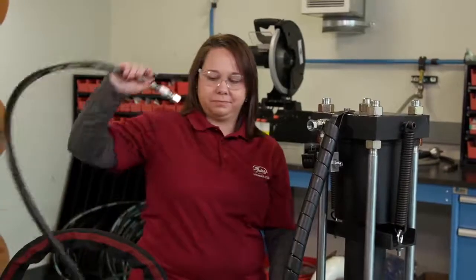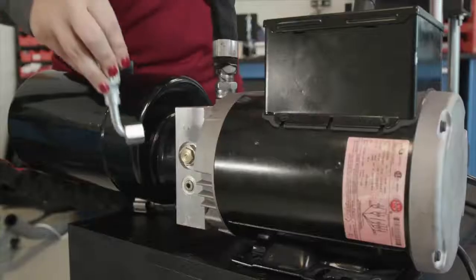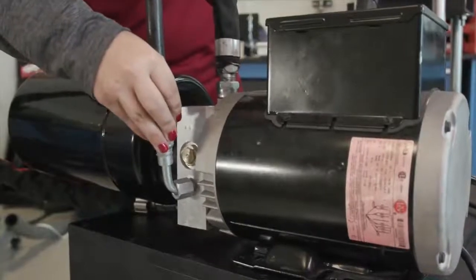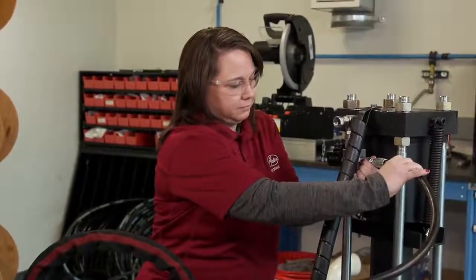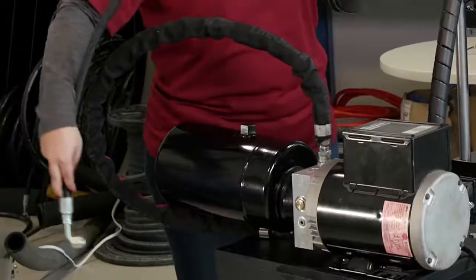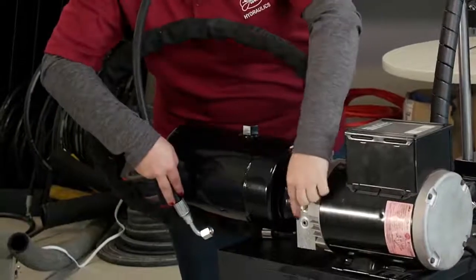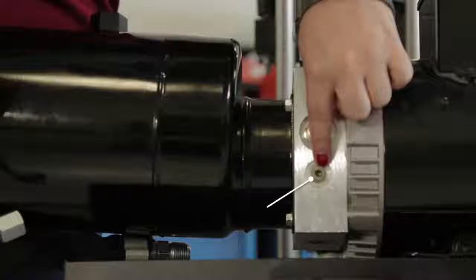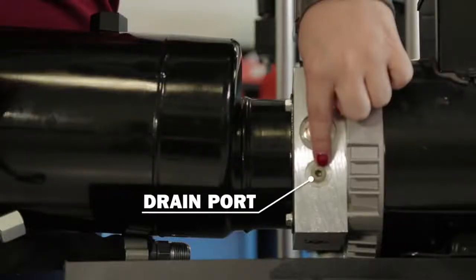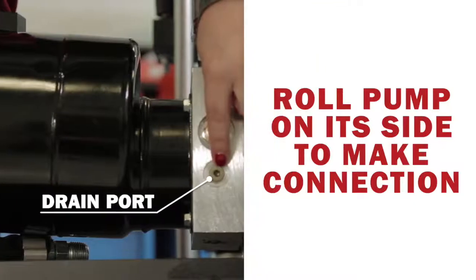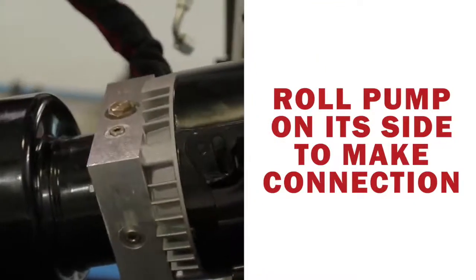Next, you'll install the return line. It's easiest if you make the connection at the pump first, then follow with the connection to the solenoid. Depending on the model of the pump, the return line connection location may vary. For the most common pump, the drain port is the lowest port on the backside of the pump. To avoid leaking hydraulic fluid, you can roll the pump on its side while you make this connection.